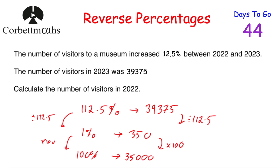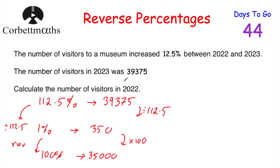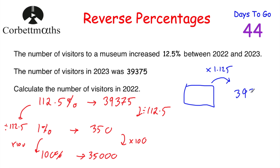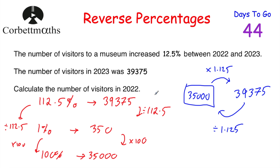Using the multiplier approach: there were a certain number of visitors in 2022, and it increased by 12.5%, so the multiplier is 1.125. That gives us 39,375. To go backwards, divide by the multiplier: 39,375 divided by 1.125 equals 35,000. So dividing by the multiplier also gives us 35,000 visitors in 2022.